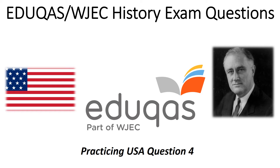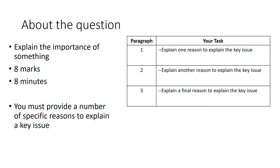This video will go through how to do the USA question 4. Question 4 is all about being able to explain the importance of something. It's 8 marks, therefore it is 8 minutes long. You must provide a number of specific reasons to explain a given key issue. In history we always like the rule of 3, so if you can provide 3 specific reasons, that is ideal. The structure is 1 paragraph per explanation.